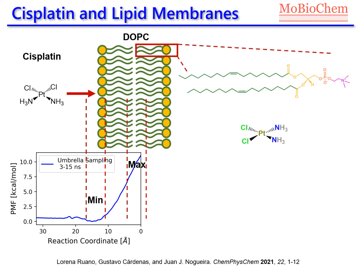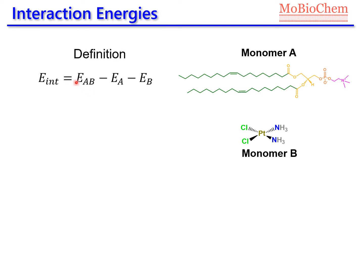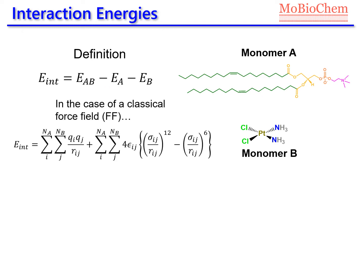Beyond the Gibbs free energy profile, we also determined the interaction energy between the lipid membrane and the cisplatin molecule. To define it, we subdivide the system into two monomers: monomer A is the DOPC lipid membrane and monomer B is the cisplatin molecule. The interaction energy is the energy of the entire complex minus the energies of each monomer computed separately. Plugging in a classical force field expression, we see it consists exclusively of pairwise non-bonded intermolecular terms.